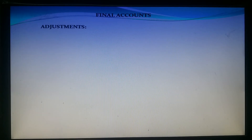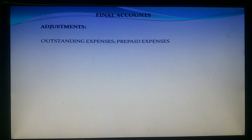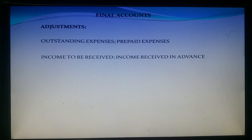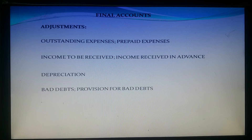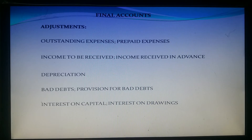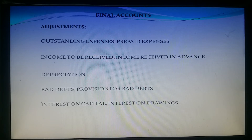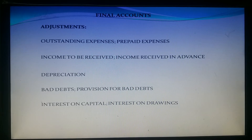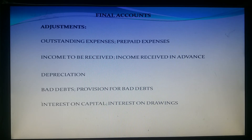Hi friends. Final accounts contains so many adjustments like outstanding expenses, prepaid expenses, income to be received, income received in advance, depreciation, bad debts, provision for bad debts, interest on capital, interest on drawings, etc. Out of all these adjustments, bad debt adjustments and provision for bad debts adjustments are very very important. Regarding bad debts, I am making this video, and about provision for bad debts I made another video — please watch that video also.